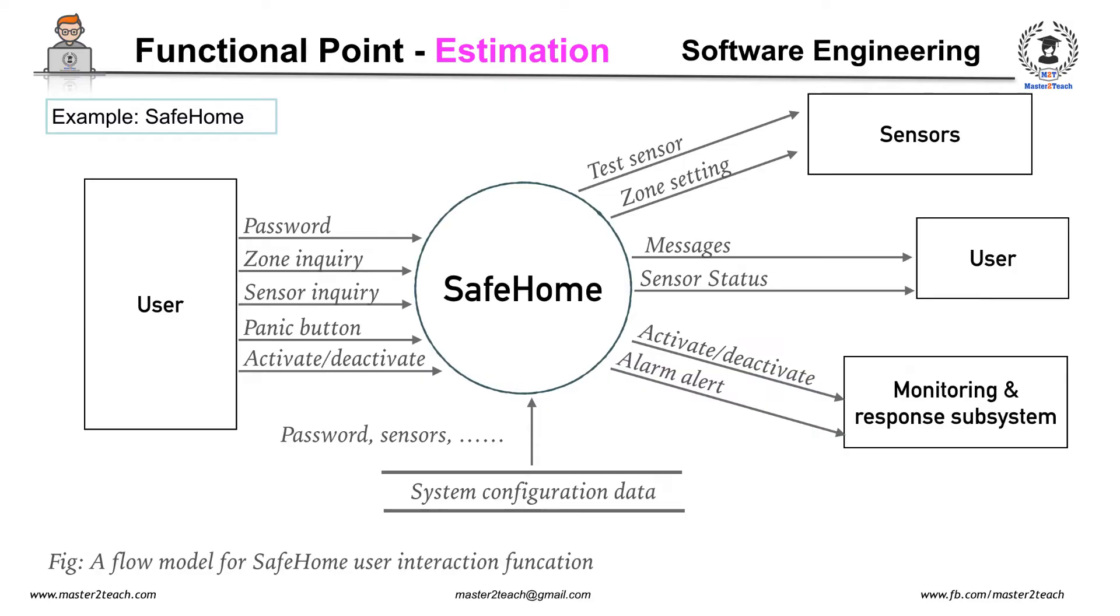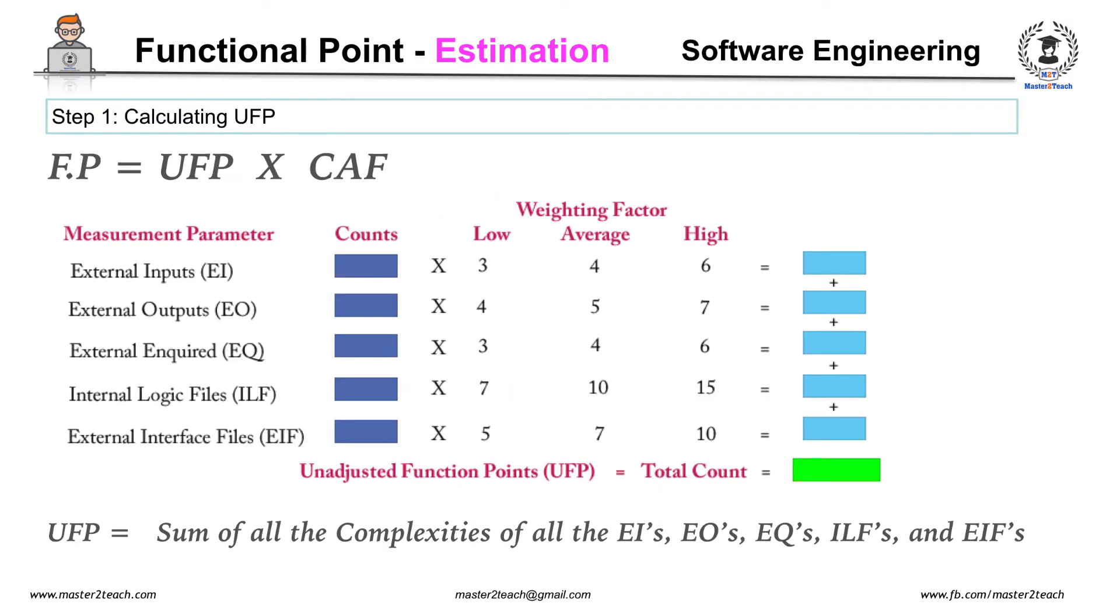Now calculating Unadjusted Functional Point with the simple weighting factor. Therefore, UFP is equal to 50.